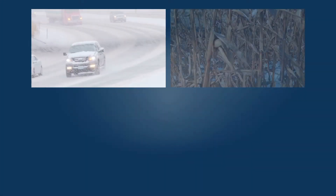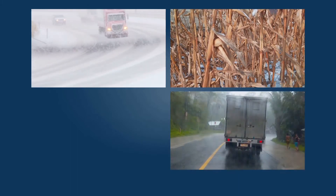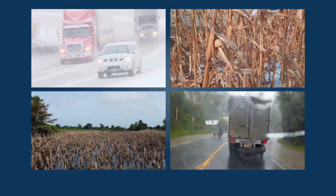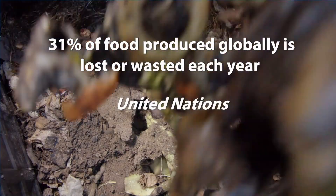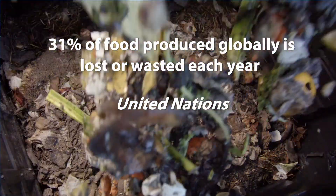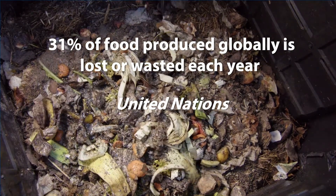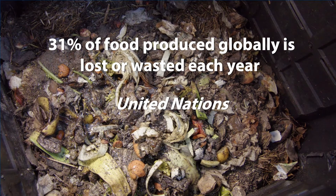Climate change is also making it harder to produce food and get it to consumers because of extreme weather events, irregular rainfall, agricultural pests, plant diseases, and other factors. At the same time, according to the United Nations, around 31% of food produced globally is lost or wasted each year, squandering resources and generating additional greenhouse gas emissions when the food decomposes.